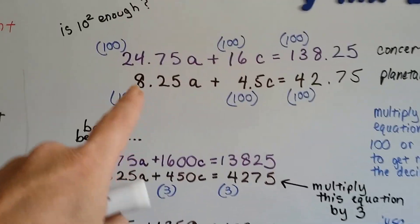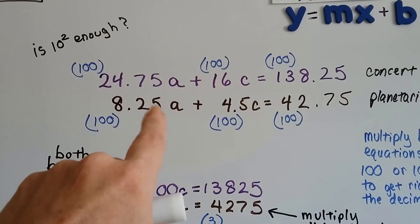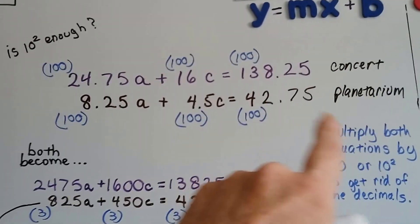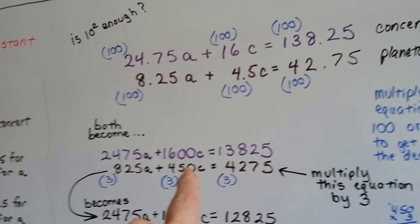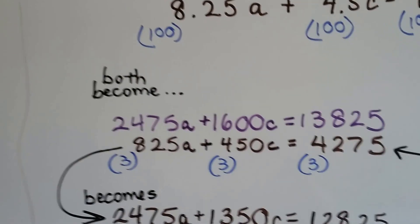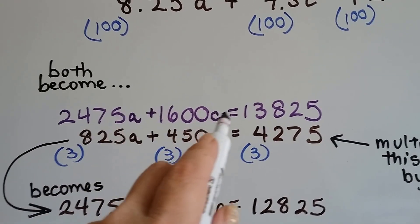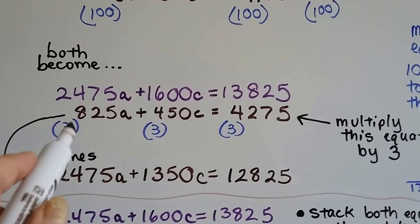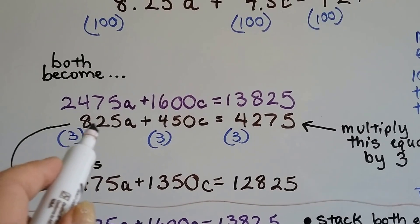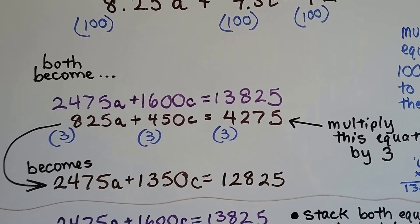We multiply each term by 100 to raise them all to equivalent equations. We remove these decimal points, and they move back behind the numbers. Now we've got 2,475A plus 1,600C equals 13,825. And our second equation is 825A plus 450C equals 4,275.